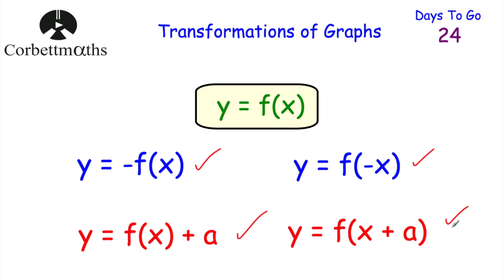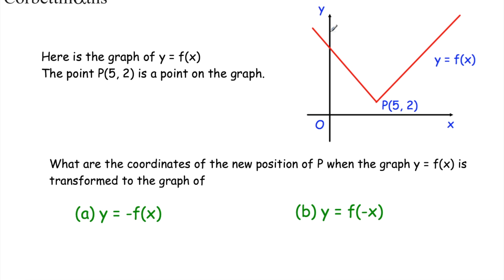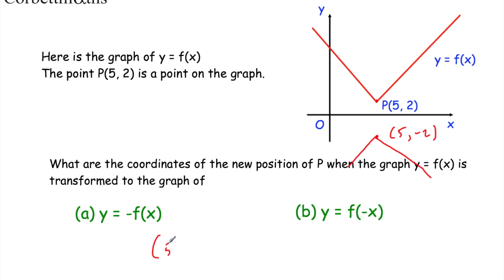Now let's look at some questions. We have the graph of y equals f of x in red, and point P is the point 5, 2. We're asked for the new coordinates of P after two transformations. For part a, y equals minus f of x reflects the graph in the x-axis. The point was 5, 2, so it moves to 5, negative 2. The y-coordinate changes sign.